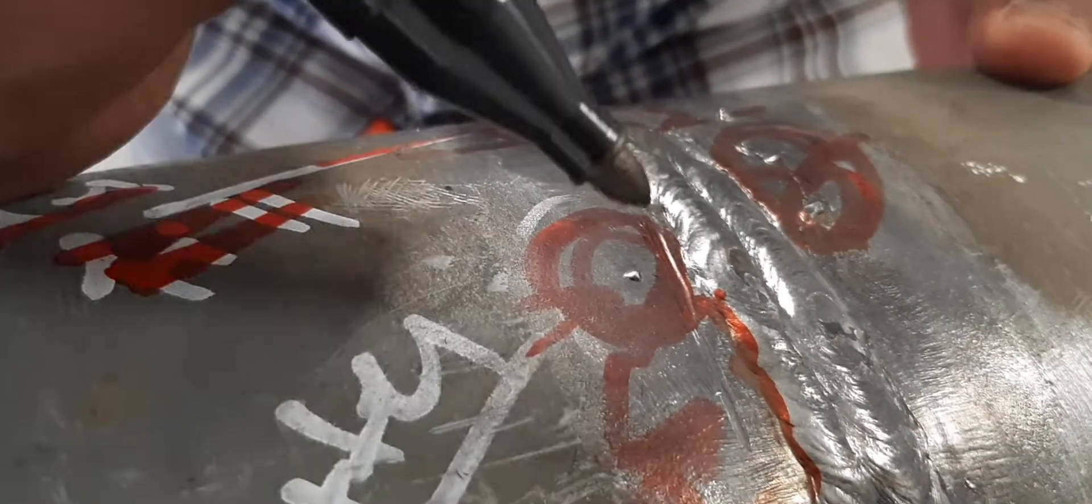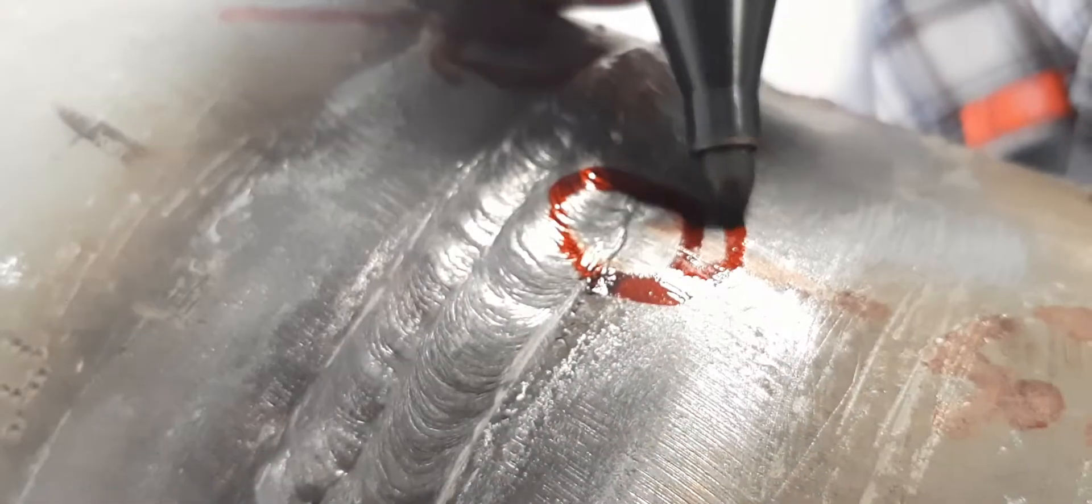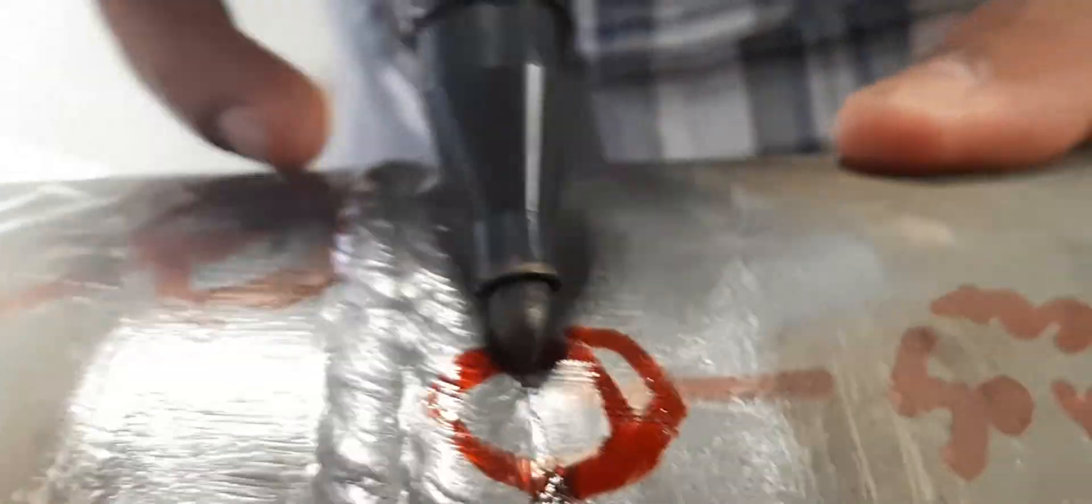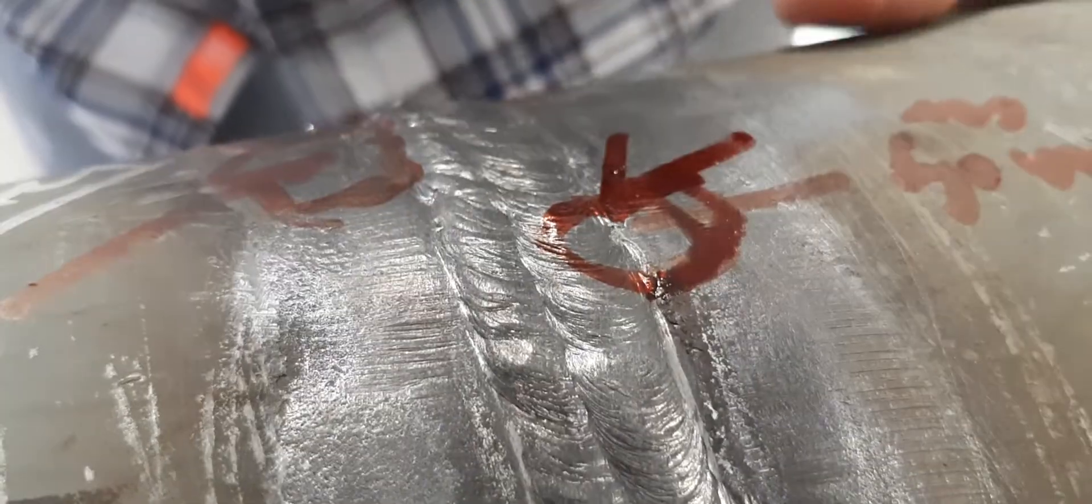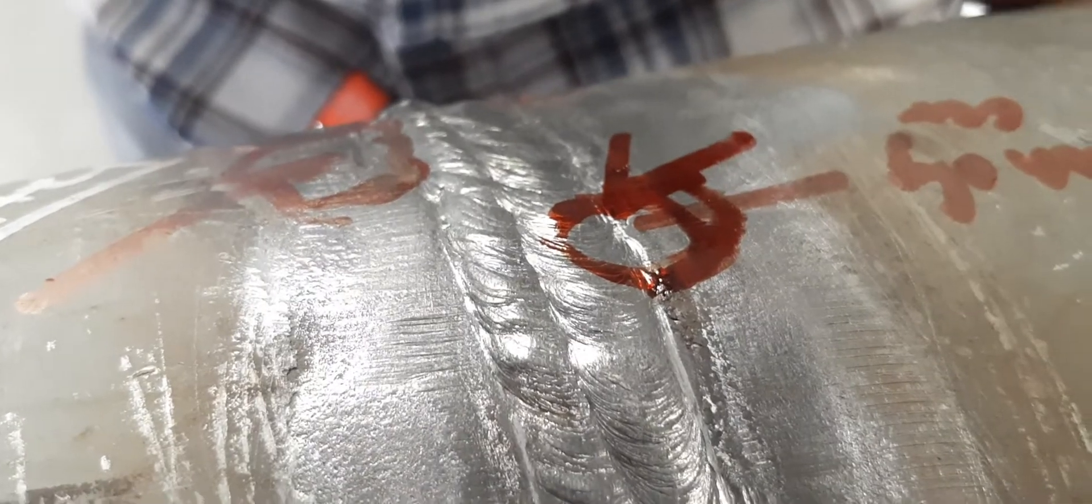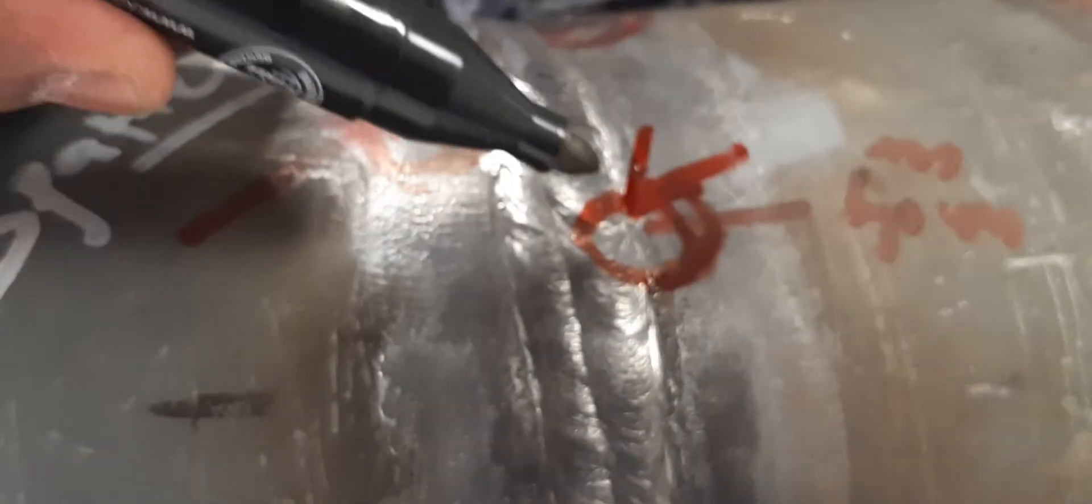See here, this is undercut. Ampere is high, we can get this undercut. Go to root - see here, this is filler cut and excess penetration.